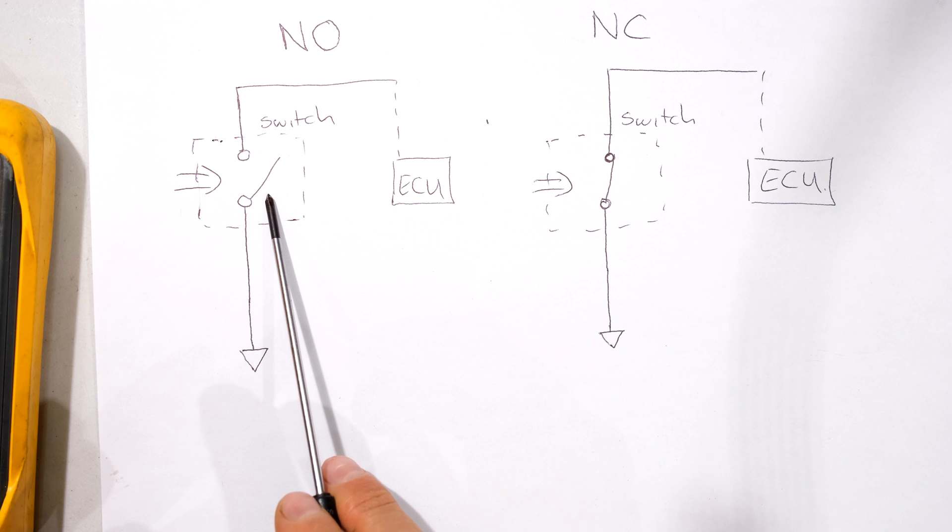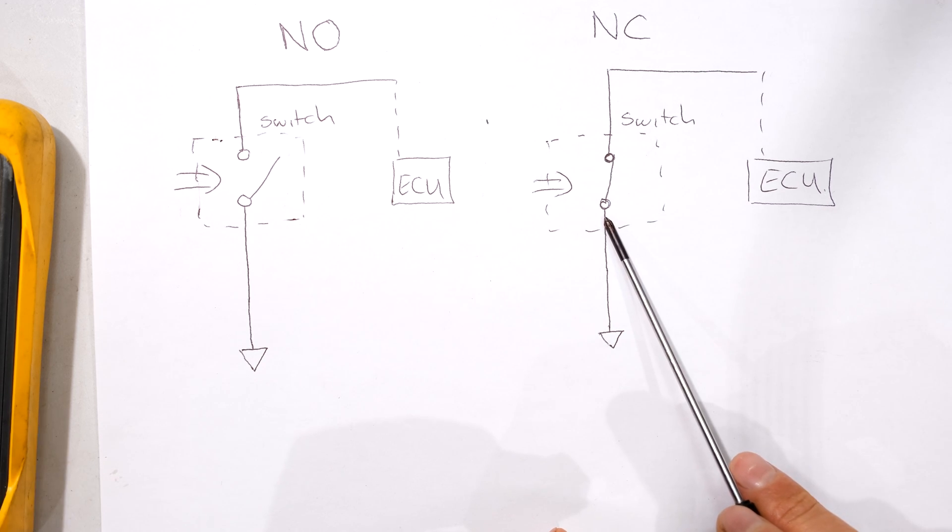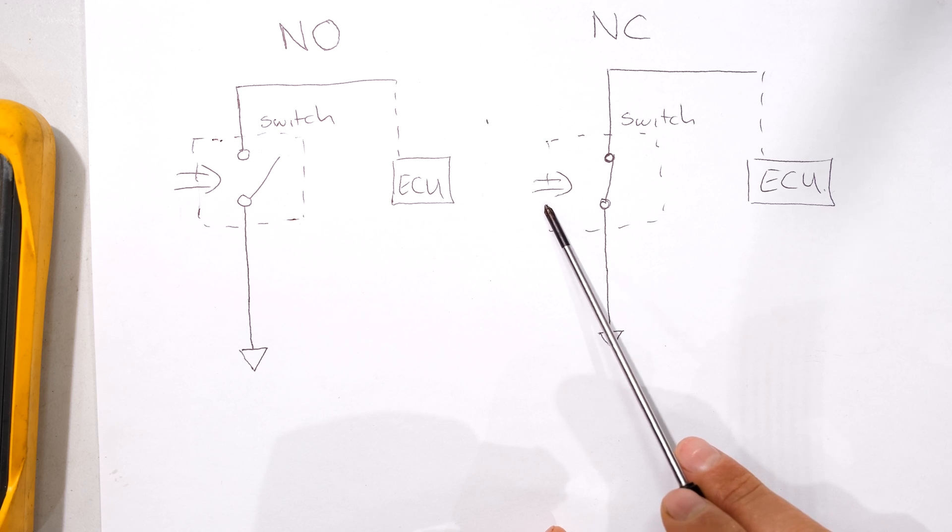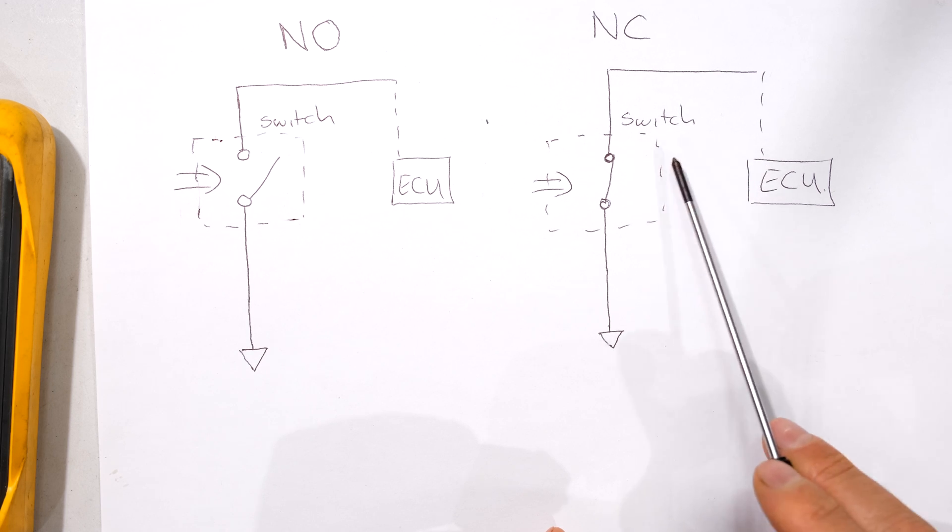The ECU monitors the closed circuit and if the circuit opens it knows there's a loss of oil pressure. On the normally closed side the switch is closed until there's enough pressure. When you start your car and the pressure builds up in the engine it will actually open the switch. The ECU monitors the switch and if the switch closes again the ECU knows that there is a loss of oil pressure.